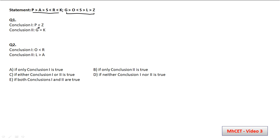The first conclusion asks: is P less than Z? Looking at the chain: P > A > S > L > Z. So P is definitely greater than Z. P cannot be less than Z. So this conclusion is not true.